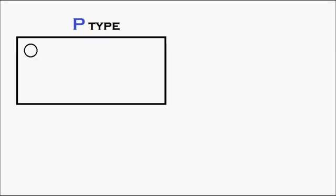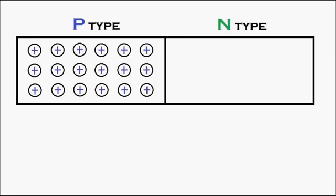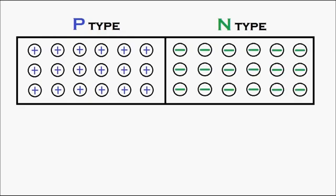Now with the help of this animation let's see how P-type and N-type semiconductors work. The P-type semiconductor has holes which are positively charged, and the N-type semiconductors have electrons which are negatively charged.